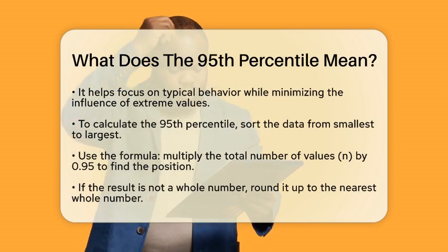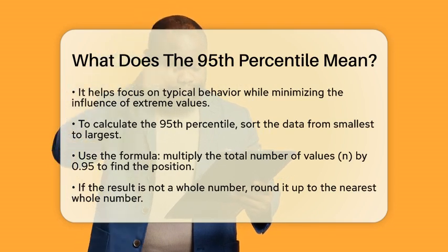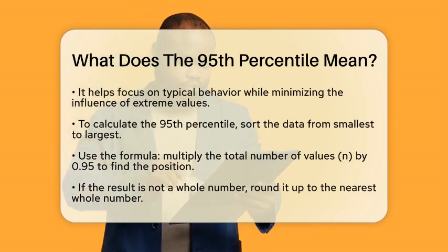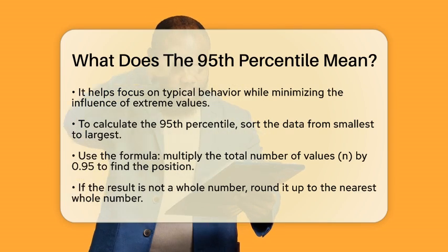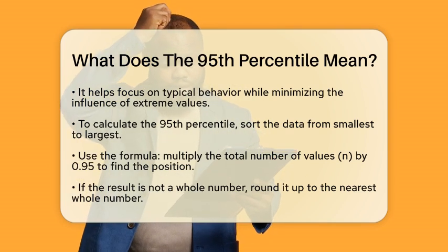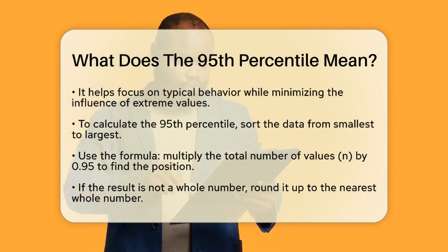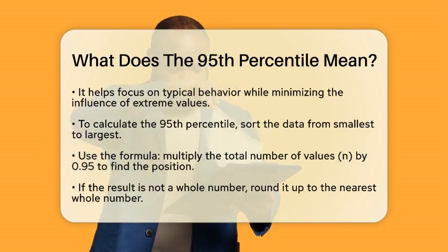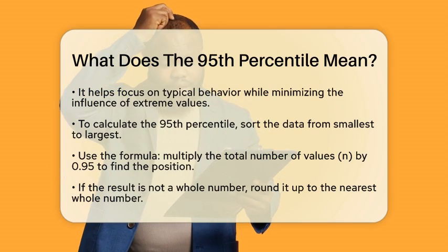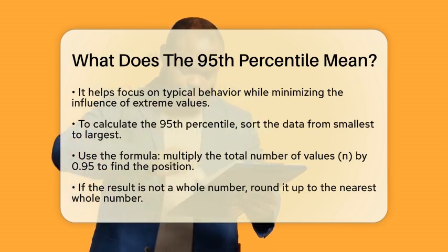To calculate the 95th percentile, first sort the data from smallest to largest. Next, find the position using this formula: multiply the total number of values n by 0.95. If the result is not a whole number, round it up to the nearest whole number — this gives you the position in the sorted list. If it is a whole number, average the values at that position and the next one. The value you find at this position is your 95th percentile.